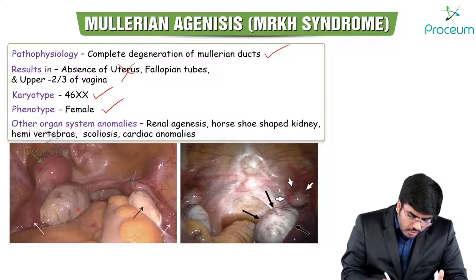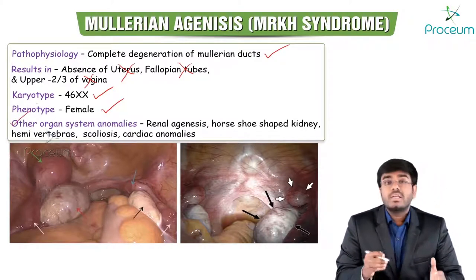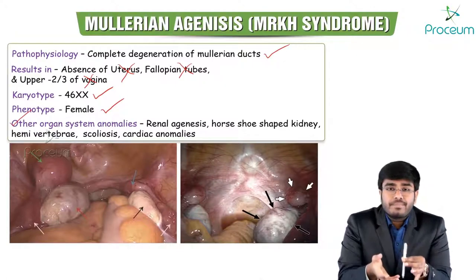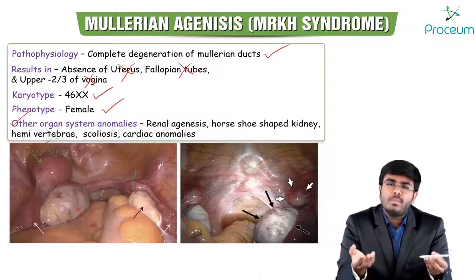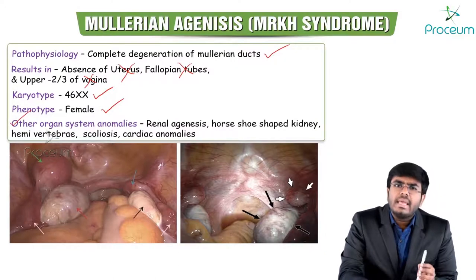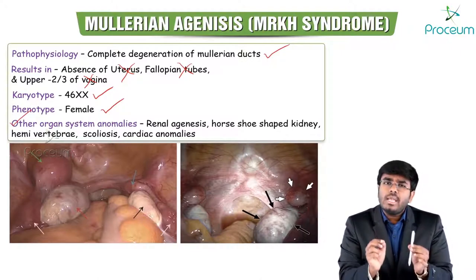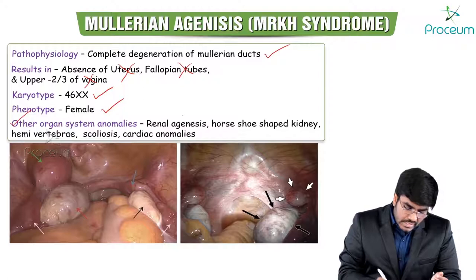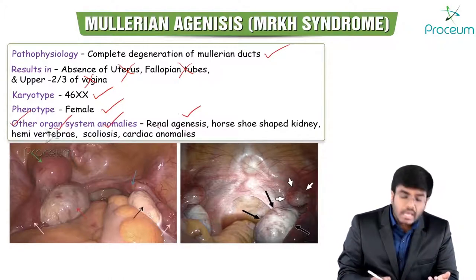The problem is complete degeneration of the Müllerian ducts — absence of uterus, fallopian tubes, and upper two-thirds of vagina. Regarding associated anomalies: when Müllerian ducts don't develop, surrounding embryological structures can also be affected. Think of it like a blast — surrounding areas get destroyed too. So there can be associated renal anomalies like renal agenesis or horseshoe kidney, hemivertebrae, and cardiac anomalies.